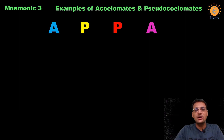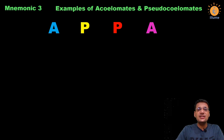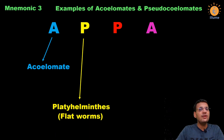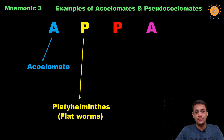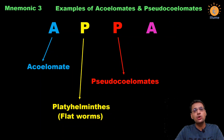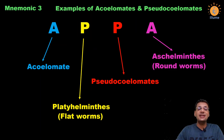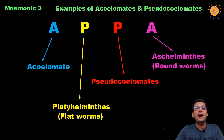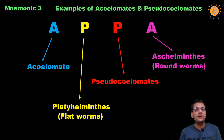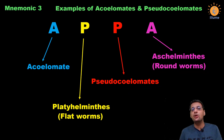In 'Appa': the first A means acoelomate, and P stands for Platyhelminthes — all flatworms belong to phylum Platyhelminthes and are acoelomates, meaning they don't have a coelom. The next P means pseudocoelomate, and the example is Aschelminthes, that is roundworms. So Platyhelminthes is acoelomate and Aschelminthes is pseudocoelomate. Primitive phyla — sponges, cnidarians, and ctenophora — we never discuss coelom in those phyla.